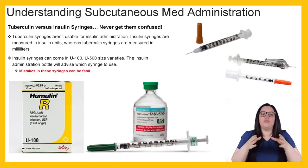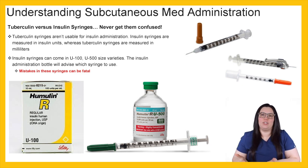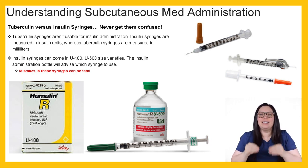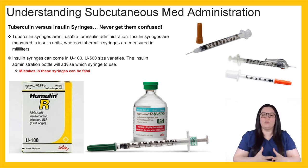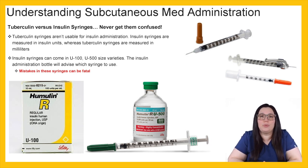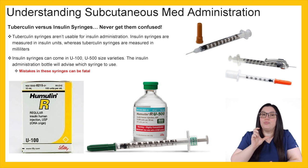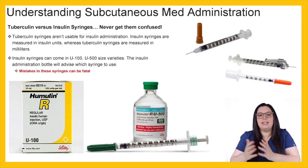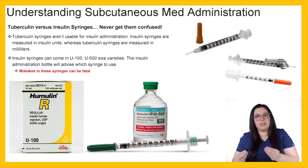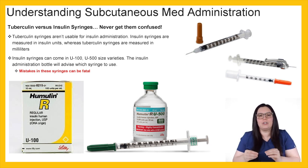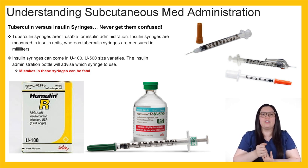I want to talk about the difference between tuberculin syringes and insulin syringes. You never want to confuse these two types of syringes because they do two totally different things and you can make a medication error. Tuberculin syringes — with the more brown top — are not usable for insulin administration. Insulin syringes — with the orange top — are measured in insulin units, while tuberculin syringes are measured in milliliters. That's why you can't get these two confused.